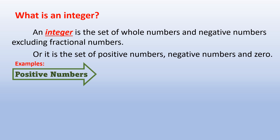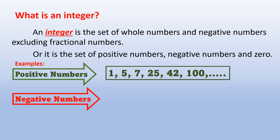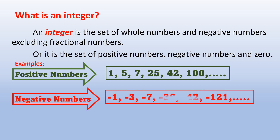Examples of positive numbers: 1, 5, 7, 25, 42, 100, and so on. Negative numbers: negative 1, negative 3, negative 7, negative 36, negative 42, negative 121, and so on.